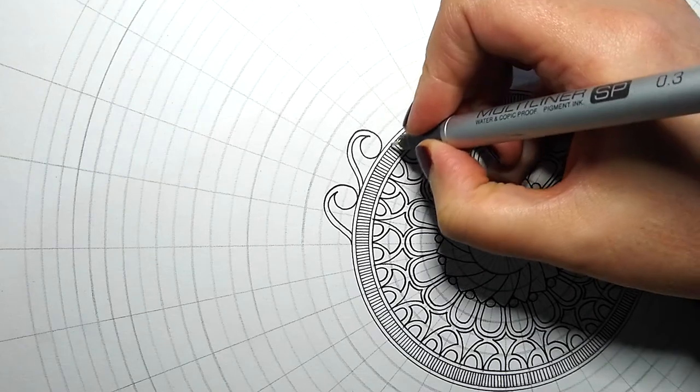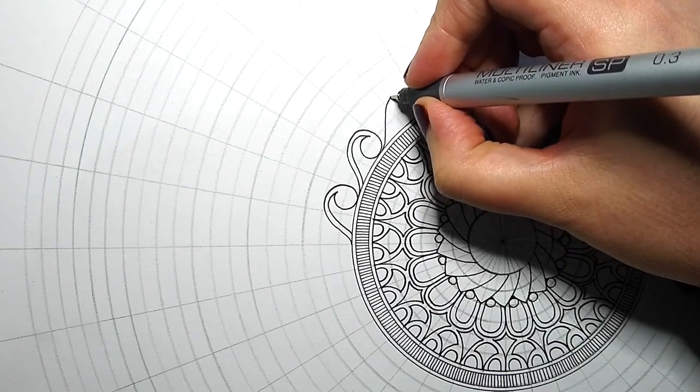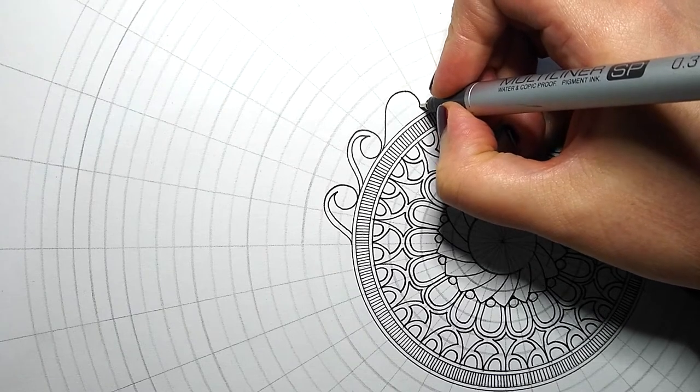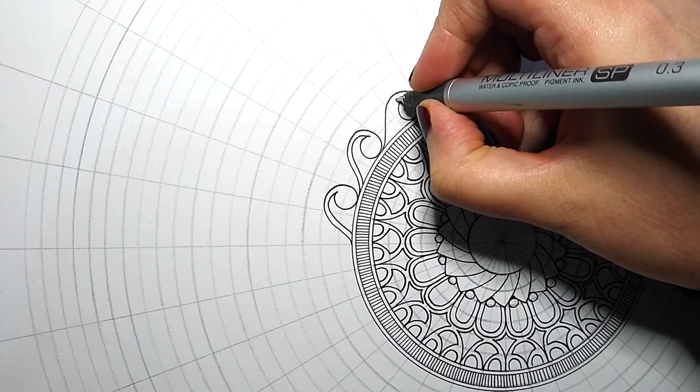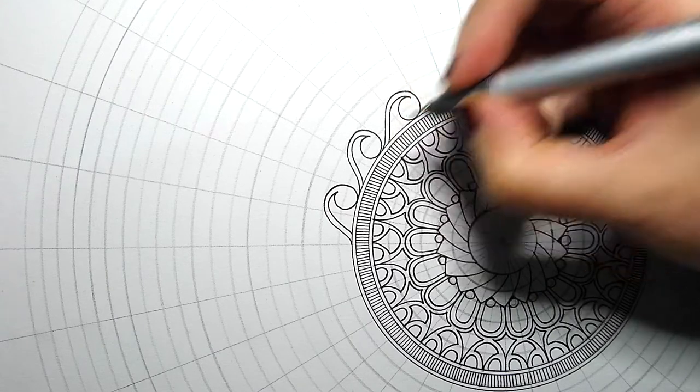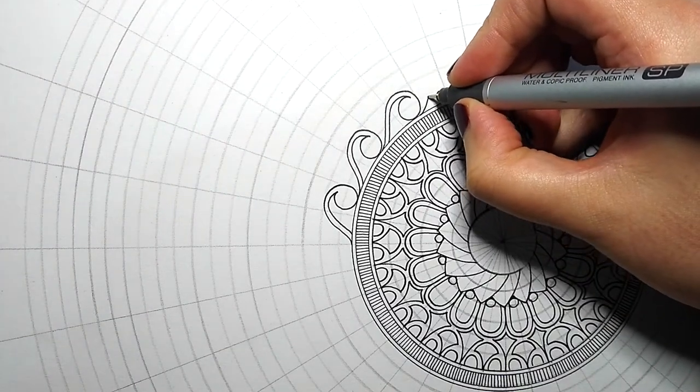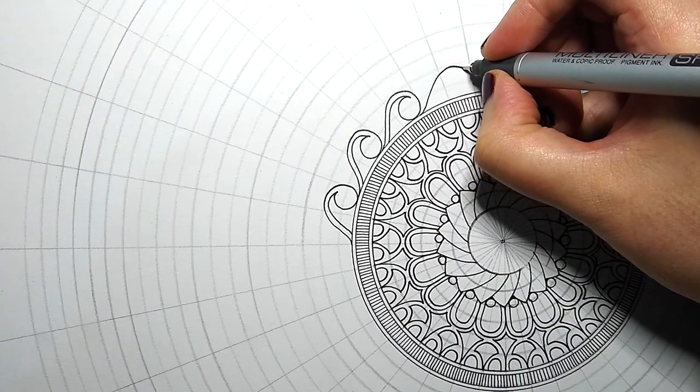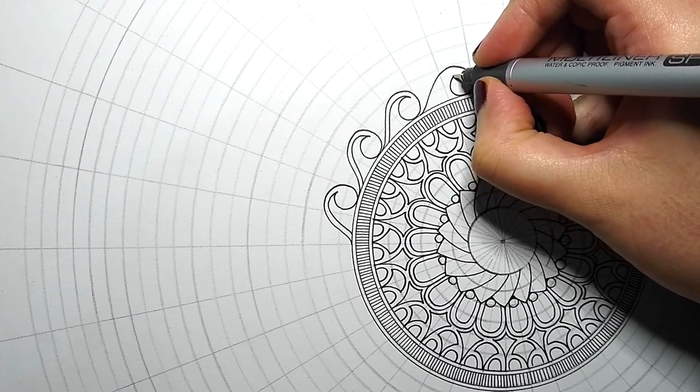So each one of these sort of bulbs, I guess I will call them, are two grid lines tall and two grid lines wide. This is one of my favorite shapes to draw. I just love how it turns out. I'll go ahead and speed up the process.